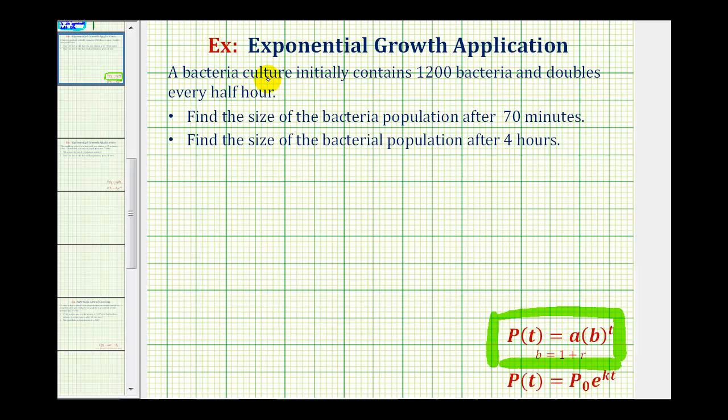Looking at the given information, we're starting with 1,200 bacteria, which means P(0) equals 1,200, meaning when t equals zero, there are 1,200 bacteria. So this is telling us that the initial amount, or a, must equal 1,200.